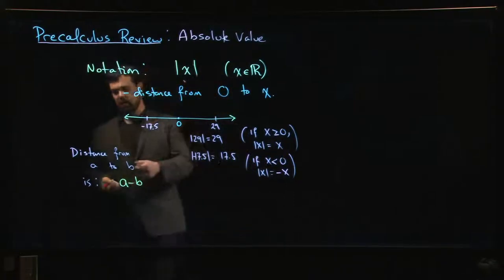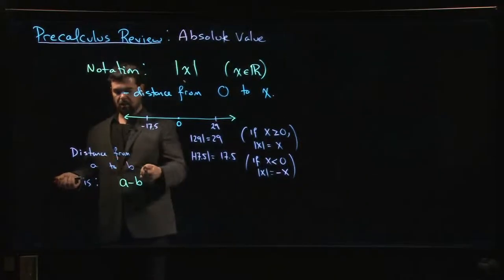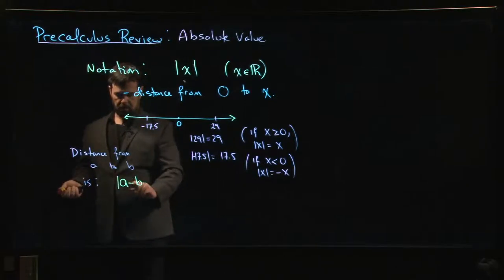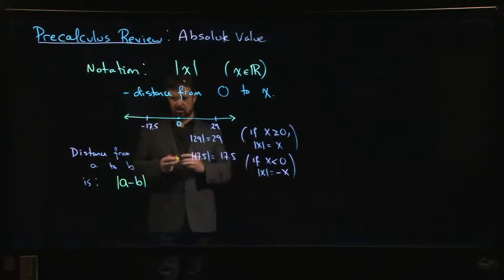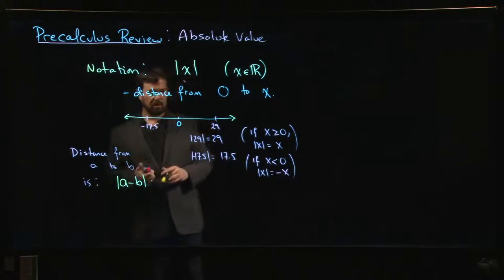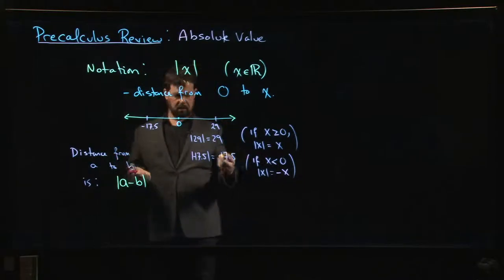The problem is, I didn't say here that a was bigger or smaller than b. I don't know. A might be bigger than b, might be smaller than b. Depending on which of these two numbers is bigger, this difference could be positive or negative. And the way you get around that is you just slap absolute values on it. As long as you take the absolute value, it's going to be a positive number. So that's the basic idea of absolute value: it just guarantees that everything is positive.